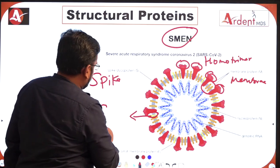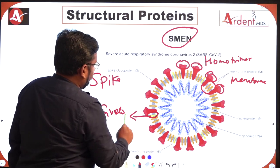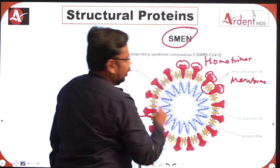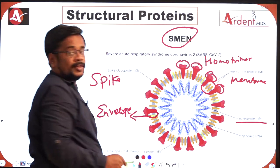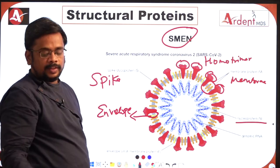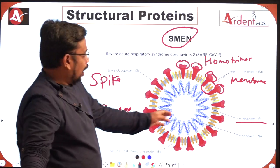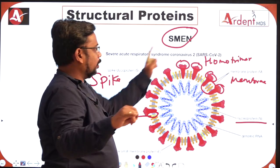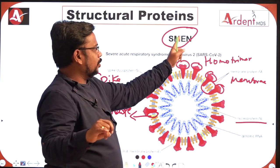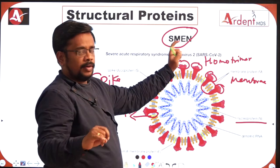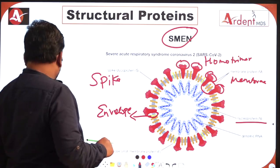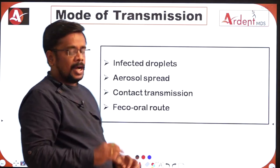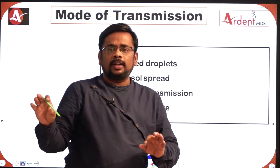E is for Envelope protein — shown in yellow color. N is for Nucleocapsid protein, which is associated with the RNA. So: S for Spike protein, M for Membrane protein, E for Envelope protein, N for Nucleocapsid protein. You may get a question like 'all these proteins are present in coronavirus except...' from this topic.